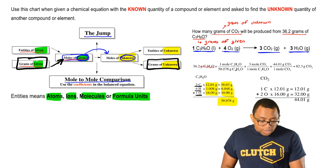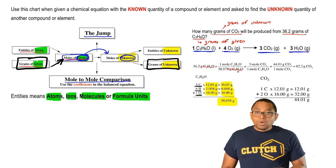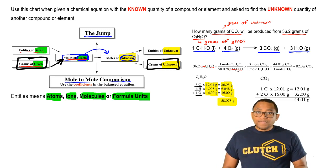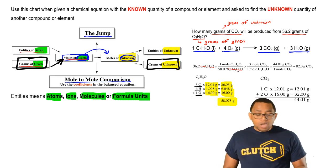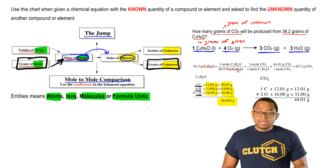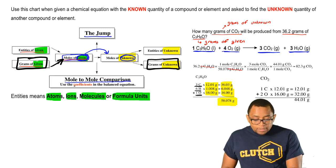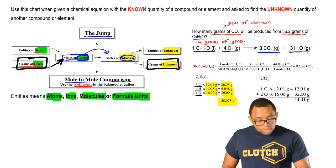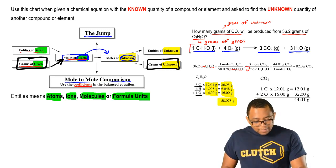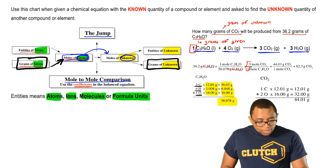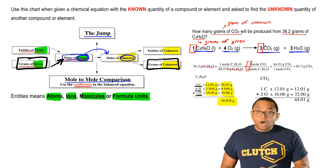Looking at our setup, grams of acetone cancel out. Now we have moles of acetone, which represents our moles of given. Next, we're going to go from moles of acetone to moles of our unknown, which is carbon dioxide. Again, we're making a jump here, so we have to use the coefficients from the balanced equation. For every one mole of acetone, we have three moles of carbon dioxide.